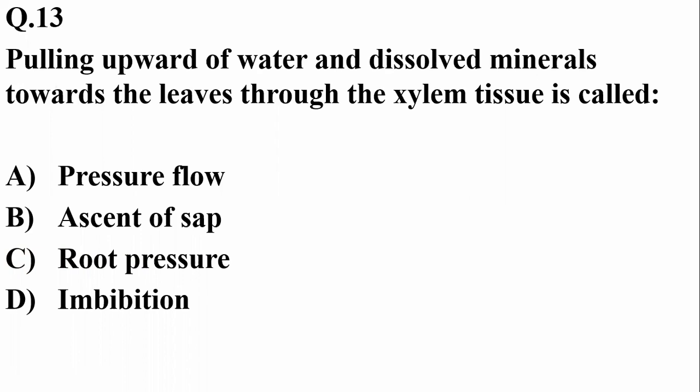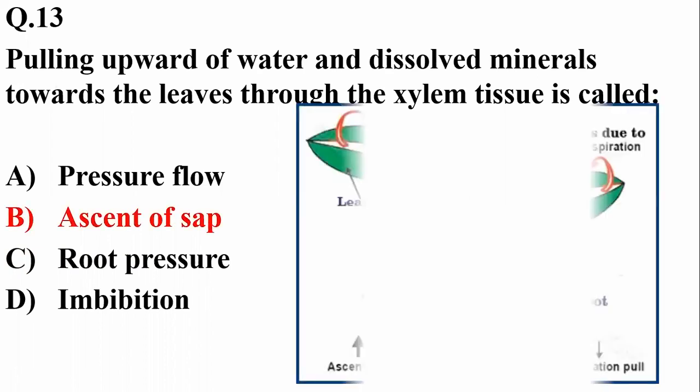Question thirteen: the pulling upward of water and dissolved minerals toward the leaves through the xylem tissue is known as ascent of sap. So Beta is the right option.